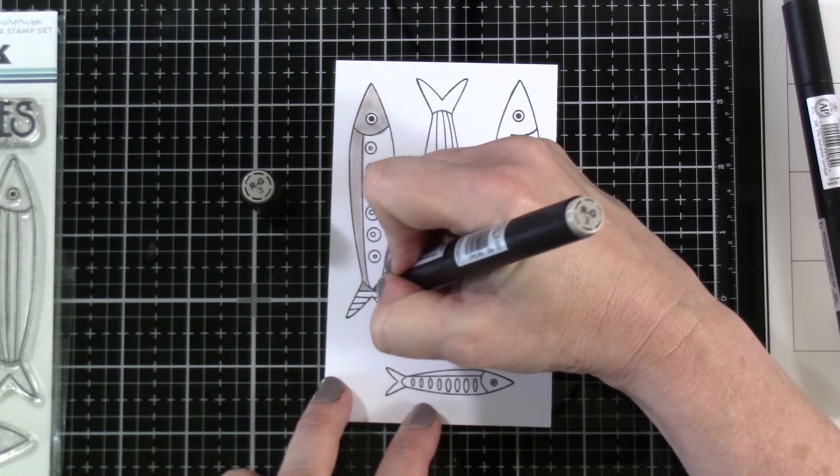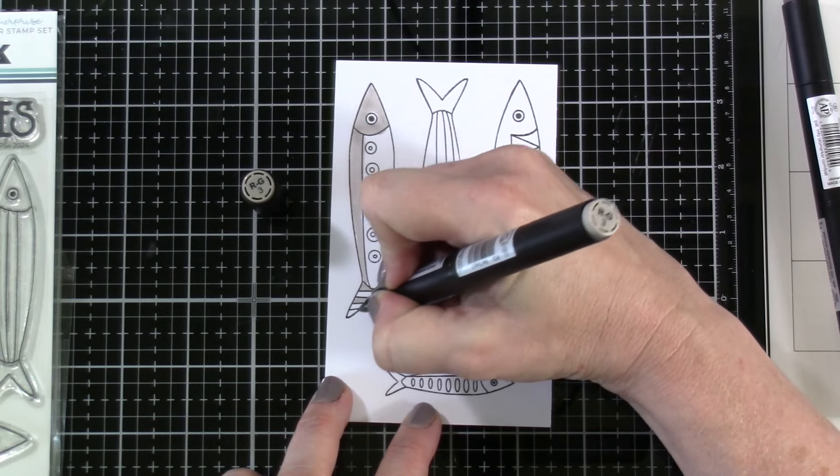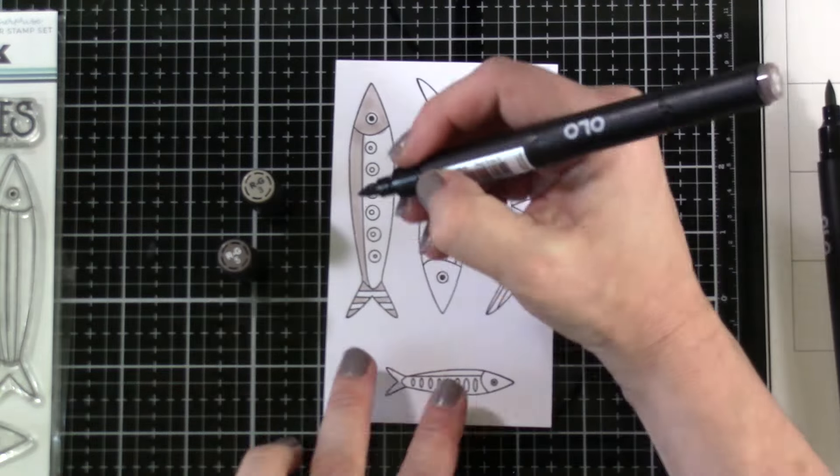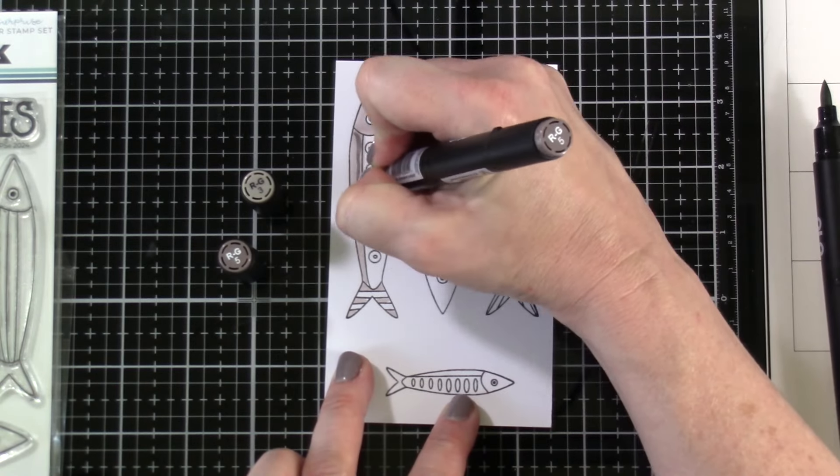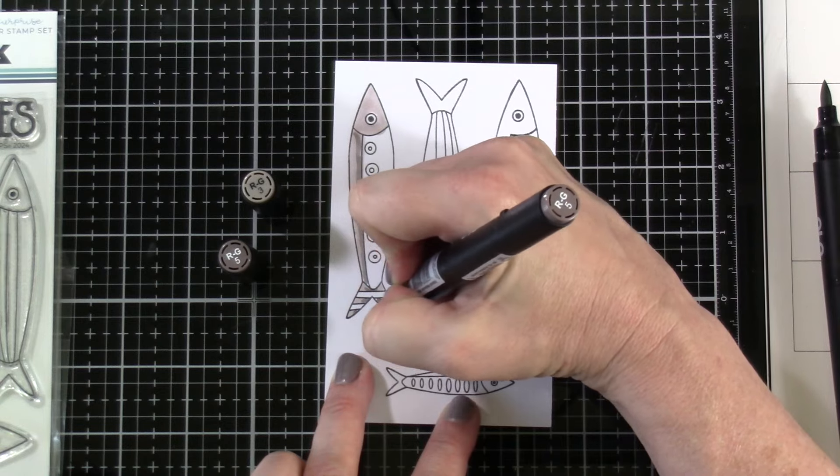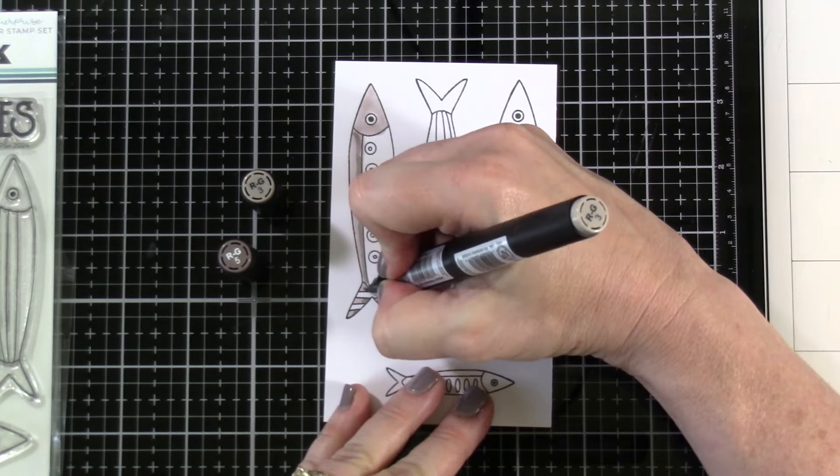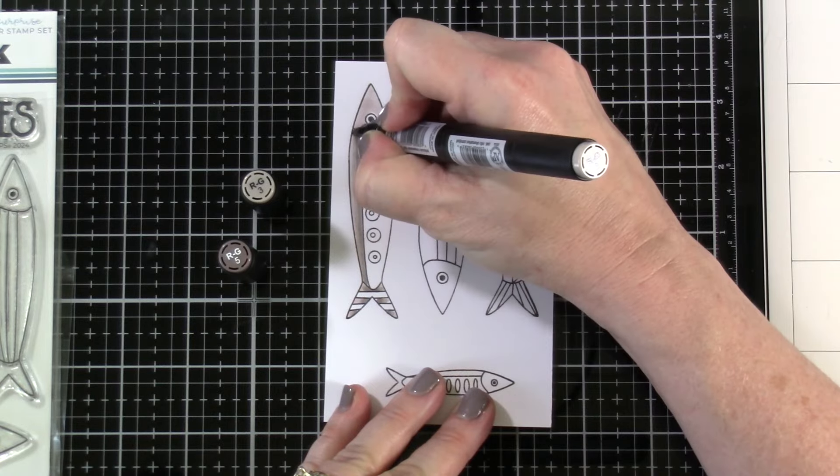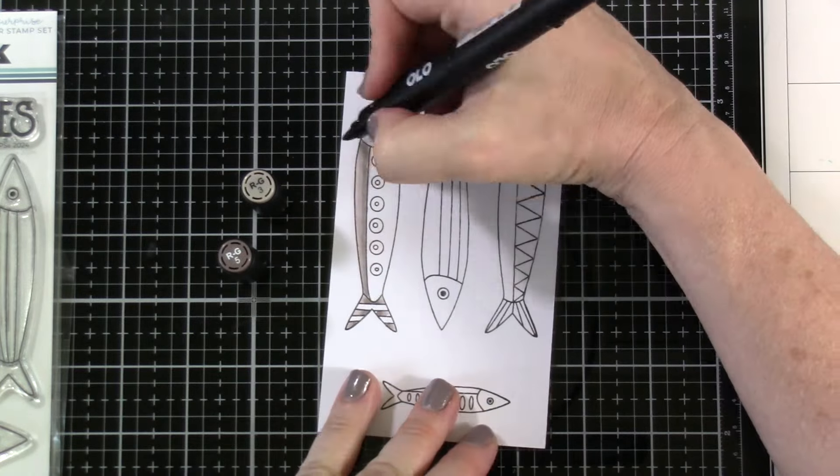All right so I'm going to go ahead and start out by coloring all of the images that I stamped out. I did stamp each of them out onto some Express It cardstock using some blackout ink by ink on three. What I've learned is with the blackout ink you definitely want to heat set that if you plan to color right away. Just hit it with your heat tool a little bit or let it sit for a while so that ink can dry.